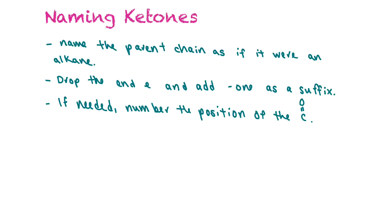Now for ketones, there's a little bit more involved. So you name the parent chain as if it were an alkane, just the same way. But you drop the N-E and you add O-N-E as the suffix. But if needed, you number the position of the carbonyl, depending on the length of the ketone.